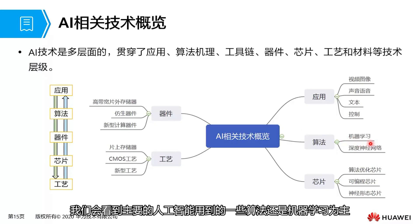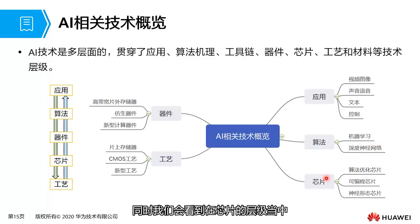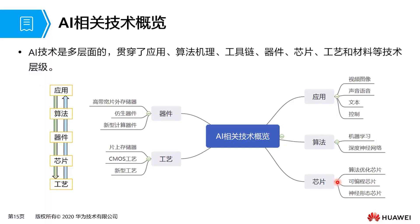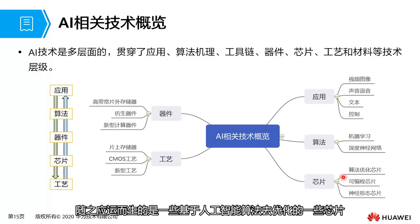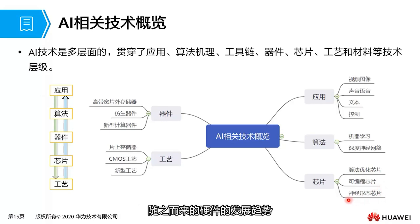In the algorithm layer at the intermediate level, the main algorithms used in artificial intelligence are still primarily based on machine learning. Deep learning neural networks are a branch of machine learning. At the chip level, traditional chips can no longer meet the computational power requirements of artificial intelligence, so chips optimized by AI algorithms or specifically designed programmable chips have emerged to meet AI application needs.